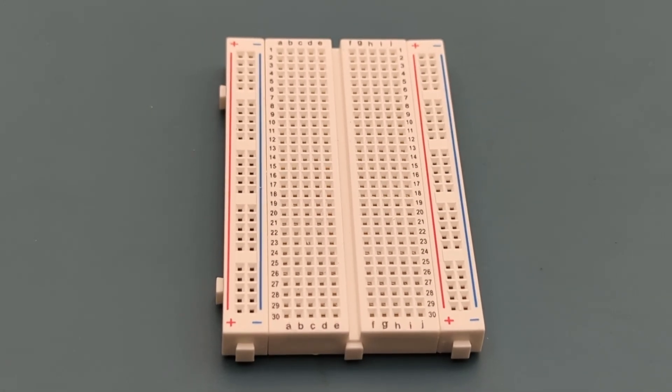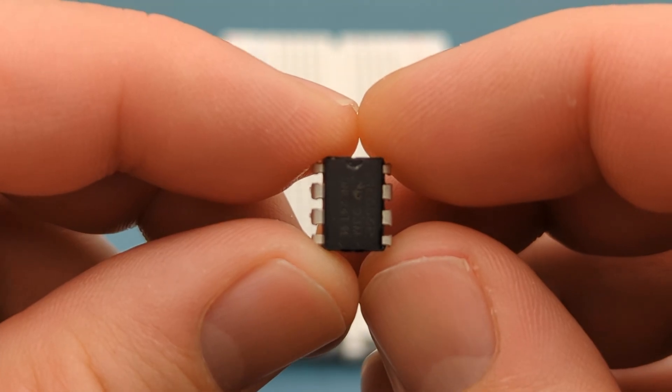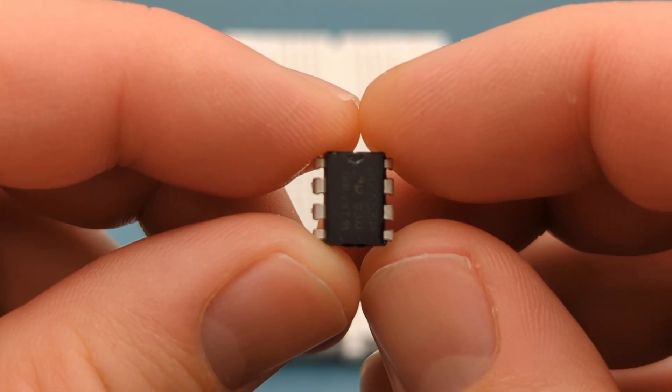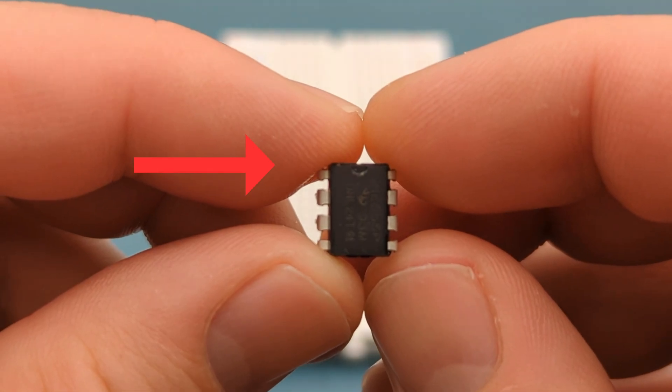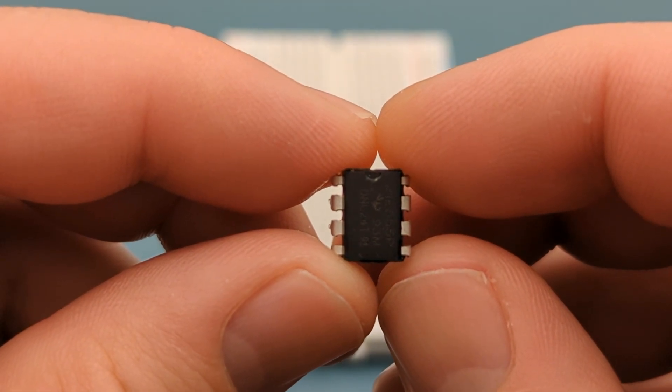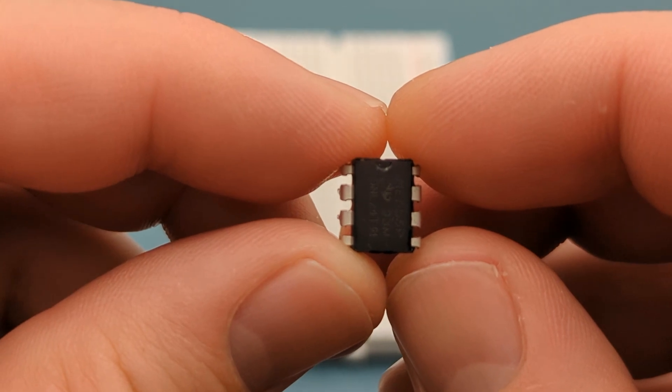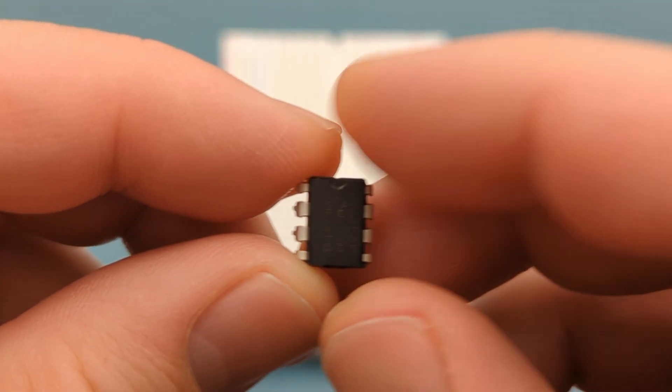Let's set up the circuit step-by-step. Begin by positioning the 555 timer IC on the breadboard. The pins are numbered counterclockwise, starting from the top left corner. Refer to the circuit diagram if you have questions about the circuit connections. Insert the 555 timer in the middle of the breadboard.